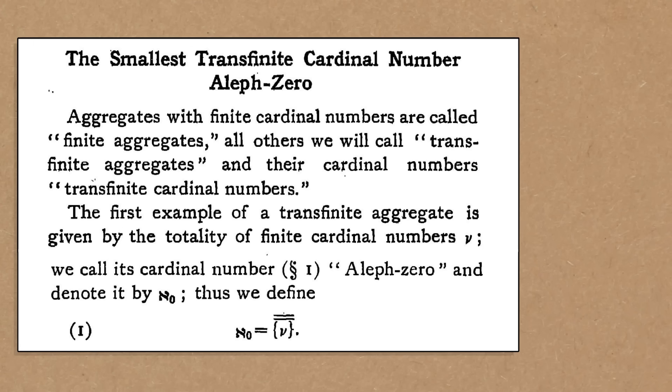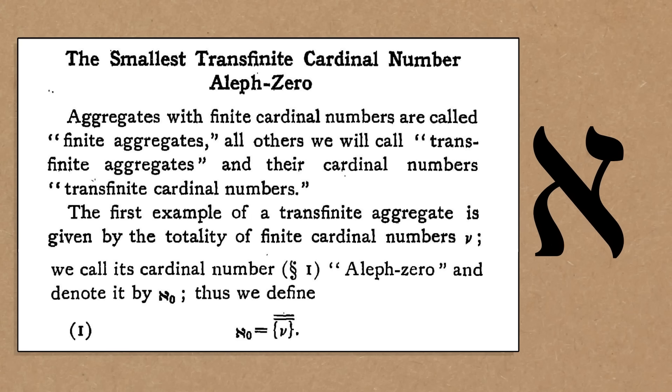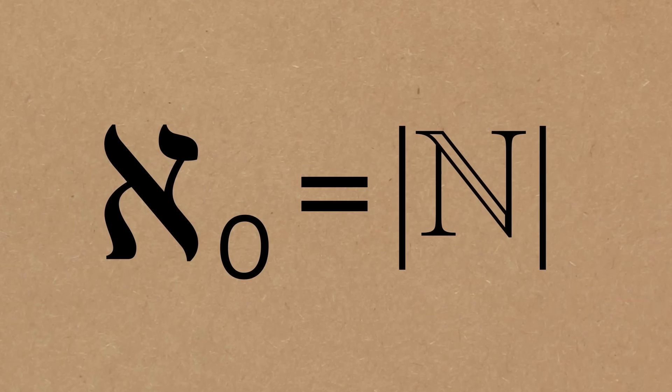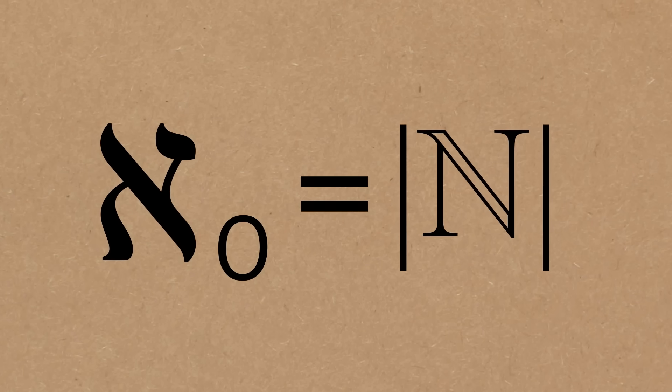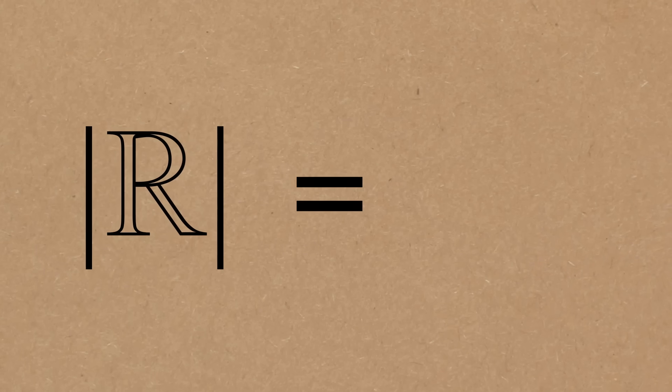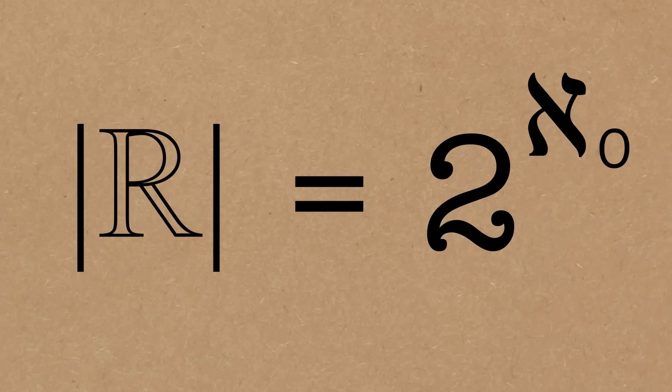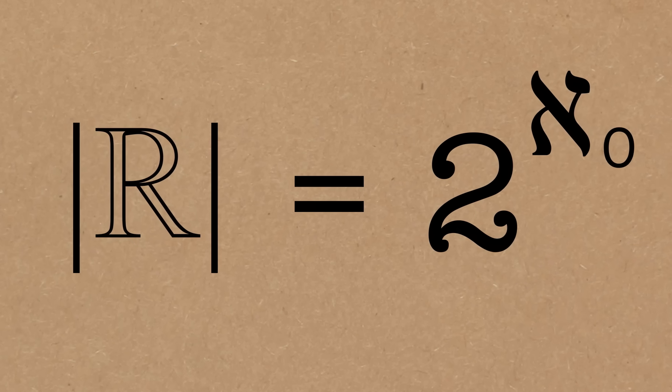Eventually, Cantor settled on the Aleph notation. Aleph is the first letter of the Hebrew alphabet. He used Aleph-0 to denote the size of the natural numbers — so this is an infinity. And the real numbers turned out to have size 2 to the power of Aleph-0. We do know the correlation exactly.